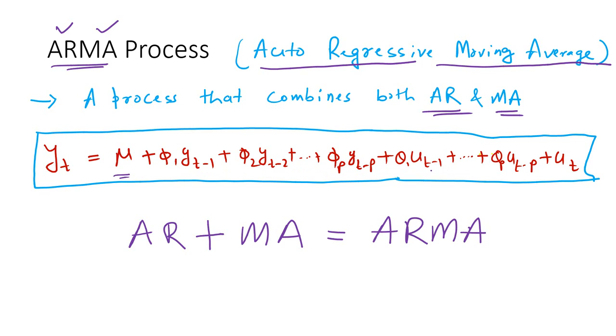And then several residual terms as well: Ut minus 1, Ut minus 2 up to Ut minus Q. Remember, Ut is a white noise process in this case. You have got the AR terms, you also got the MA terms.